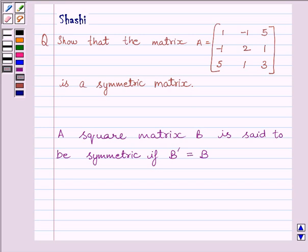First of all, let us understand the key idea to solve the given question. A square matrix B is said to be symmetric if B transpose is equal to B. That means the transpose of B is equal to itself. So this is the key idea to solve the given question.